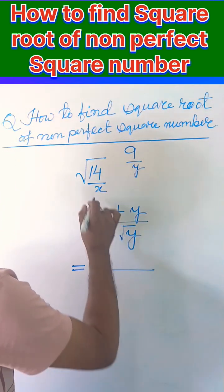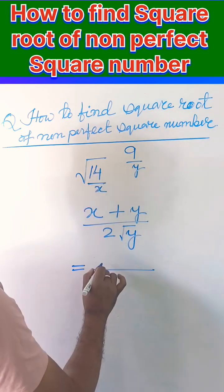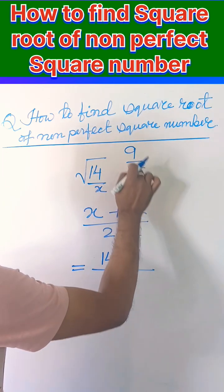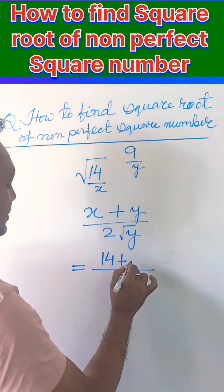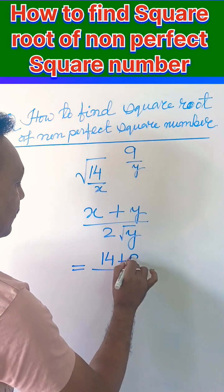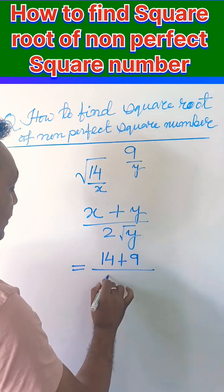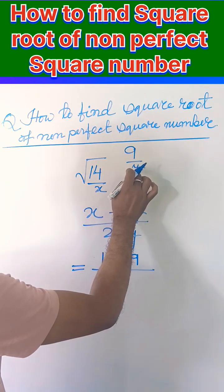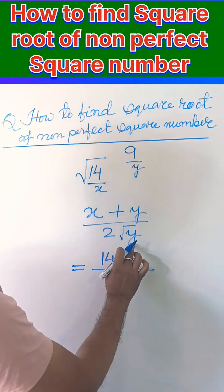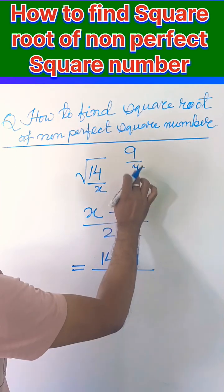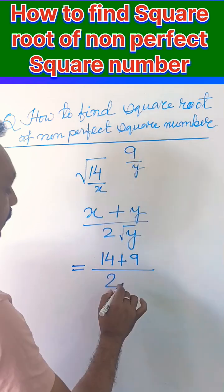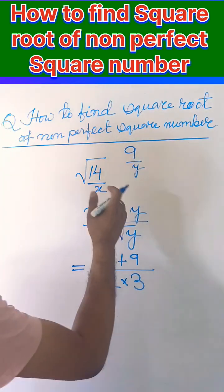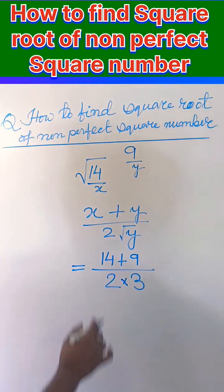Here we have considered x as 14, so put the value 14. We have considered y as 9, so put the value 9. Now square root of y — square root of 9 — that will give you 3. So square root of 9 is 3.